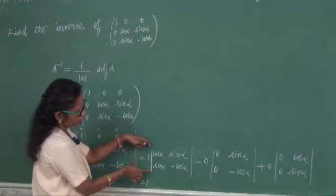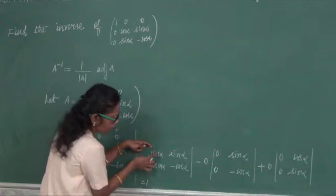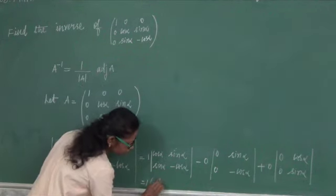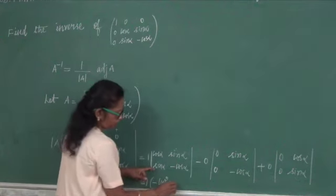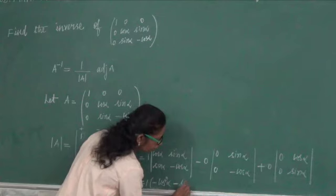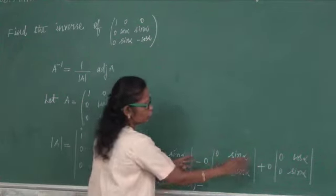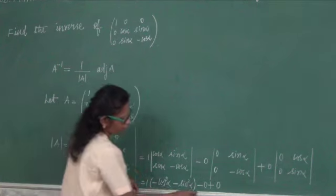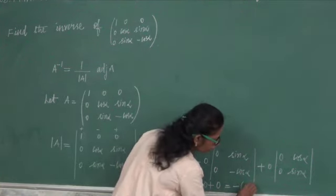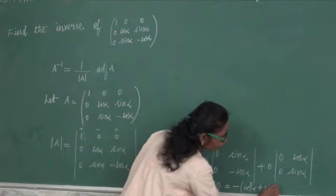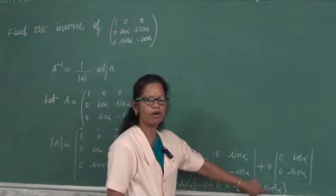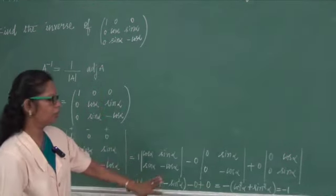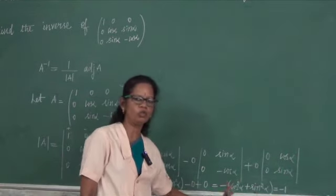Now 1 into the determinant of the 2 by 2: product of main diagonal minus product of sub diagonal gives minus cos alpha into cos alpha minus sin alpha into sin alpha, which is minus cos squared alpha minus sin squared alpha, plus 0. Taking minus as common, you get cos squared alpha plus sin squared alpha. By the trigonometric identity, cos squared alpha plus sin squared alpha equals 1. So your determinant value is minus 1.